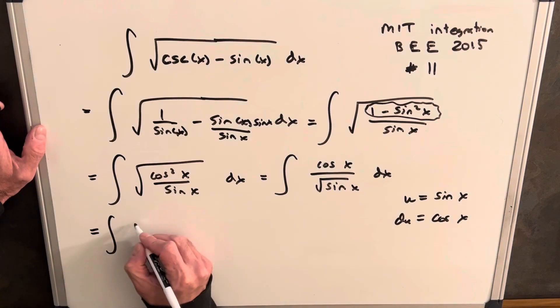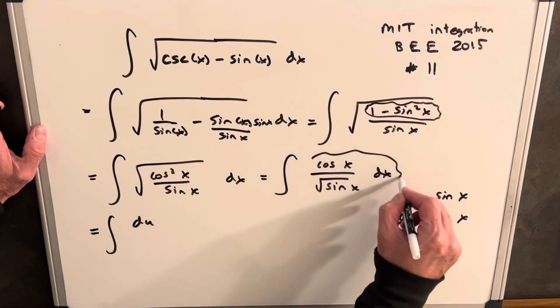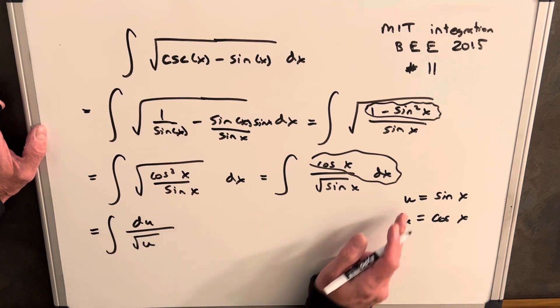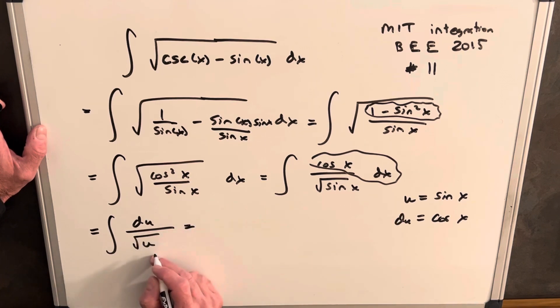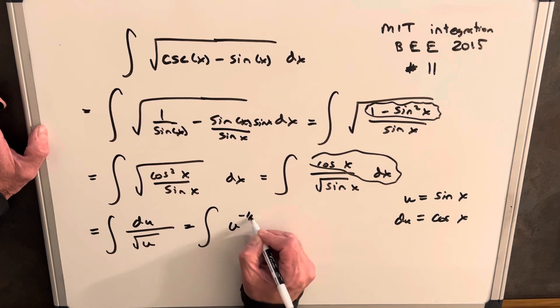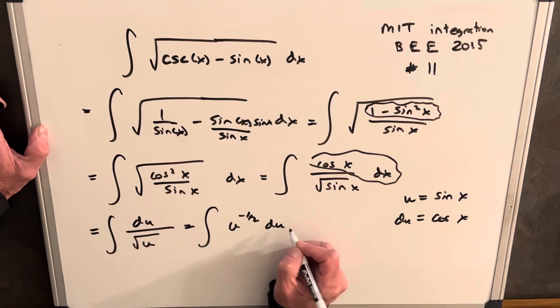Then we'll rewrite this again as, notice we just have our du on top here. So it's going to be du over the square root of u. But then let's just get that into, let's write this as a power, so we can use the power rule more clearly. So it's going to be u to the minus 1 half du.